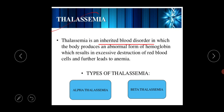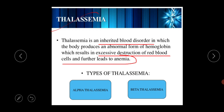In thalassemia, the body produces an abnormal form of hemoglobin which results in the excessive destruction of red blood cells and further leads to anemia. We already discussed sickle cell anemia, and we know that anemia is very dangerous and lethal for our body because the oxygen-carrying capacity becomes decreased. Thalassemia is one kind of lethal disease for that reason.